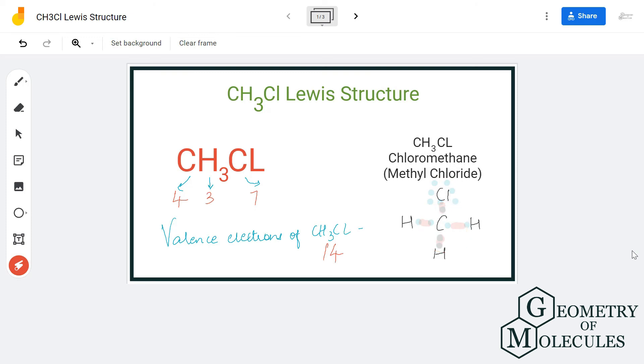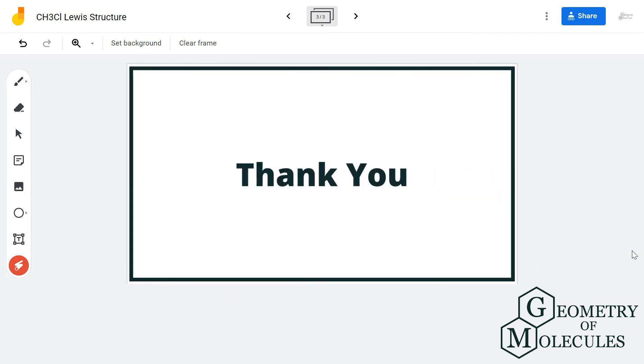So this is the Lewis dot structure of CH3Cl. To know more about its molecular geometry, shape, polarity, and other such properties, you can check out the link given in the description box below. And for more such videos, subscribe to our channel.